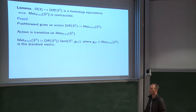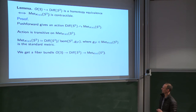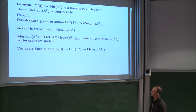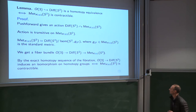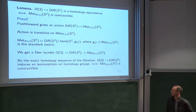We have a coset space. In the finite-dimensional case we would immediately say we have a fiber bundle — the big group, the subgroup, and the coset space, giving a fibration. This is infinite-dimensional, but it turns out it's not hard to justify that this is still a fiber bundle. Using the exact homotopy sequence of the fibration, the inclusion is a homotopy equivalence if and only if it induces an isomorphism on homotopy groups, which is equivalent to saying the coset space has trivial homotopy groups — i.e., it's contractible. So we're reduced to showing that the space of curvature-1 metrics is contractible.